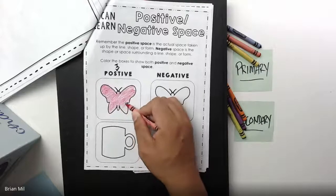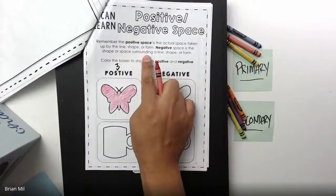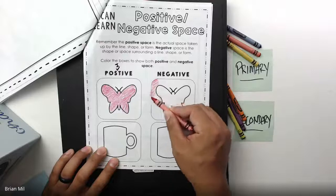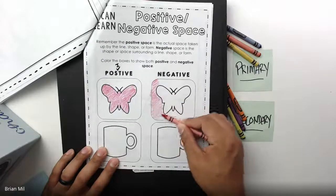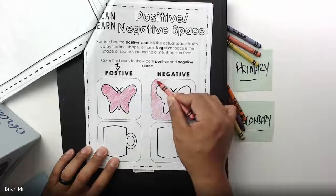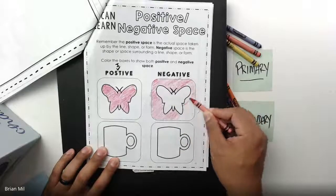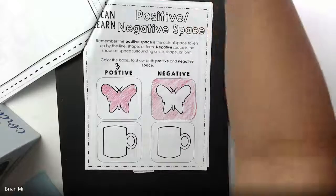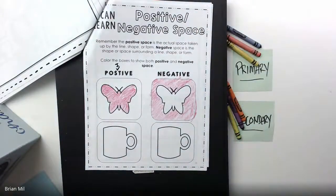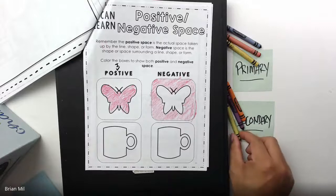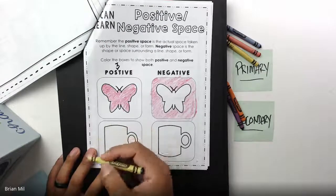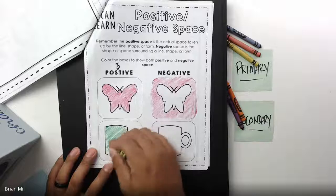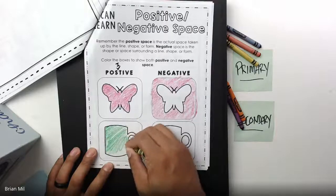If negative space is the shape or space surrounding a line, shape, or form, you want to color the opposite — that's the negative space, so color that portion. Now try to figure out the bottom one on your own — it's a mug and there's a little trick part, so make sure you catch it. Do the positive first and then do the negative afterwards, and once I'm done I'll talk about what I did.